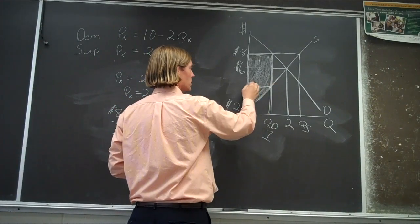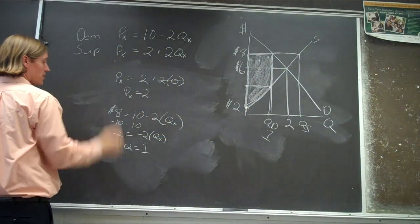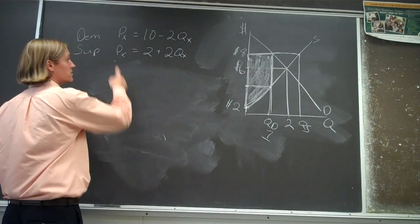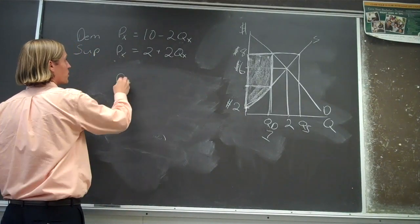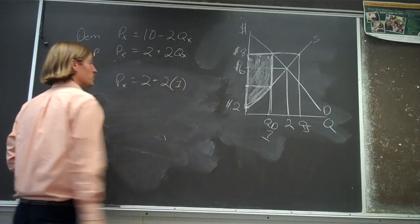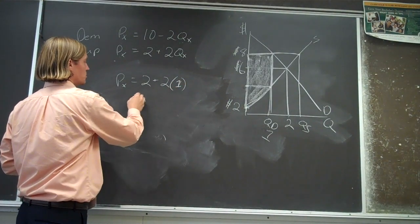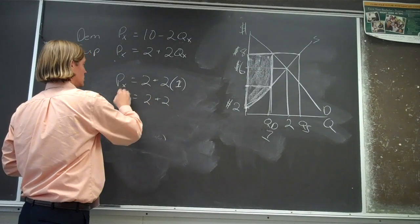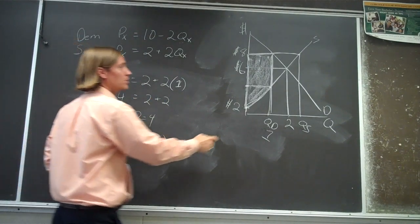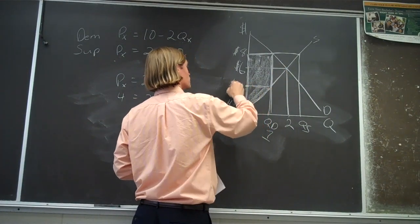Now we can figure out what this price is. Going back into the supply equation: what's the price when producers are supplying one unit? That should be two plus two — four. So the price is four whenever suppliers are supplying one unit, meaning this point has a price of four.